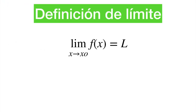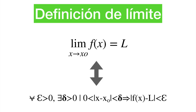Definición de límite: el límite cuando x tiende a x₀ de la función f(x) igual a L, si y solo si para cualquier epsilon mayor que 0 existe un delta mayor que 0 tal que 0 menor que el valor absoluto de x menos x₀ menor que delta, y esto implica que el valor absoluto de f(x) menos L es menor que epsilon.